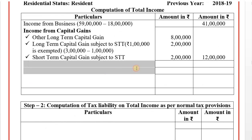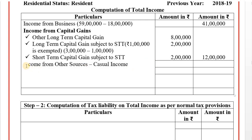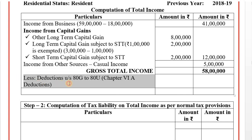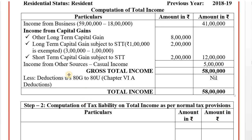Casual income from other sources: 5 lakhs. Total gross income: 41 lakhs (business) plus 12 lakhs (capital gain) plus 5 lakhs (casual income) equals 58 lakhs. Deductions under chapter 6A are nil. Total income: 58 lakhs. Step 1 is complete.